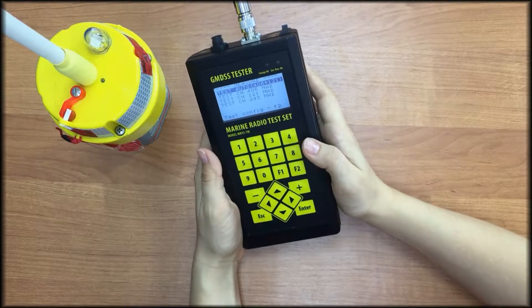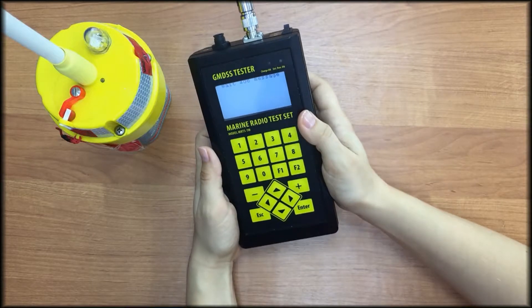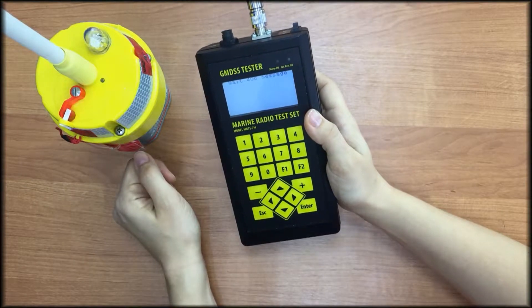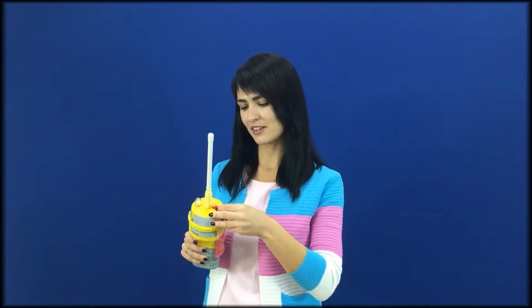We will perform auto test mode. Press enter and wait for a signal from E-PIRB. Now we should turn on the beacon to emit the signal. We place the E-PIRB on a recommended distance of 3 to 5 meters. Now we turn it to the self-test mode, what is strongly recommended for testing purposes.